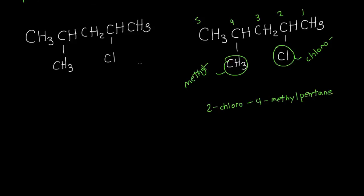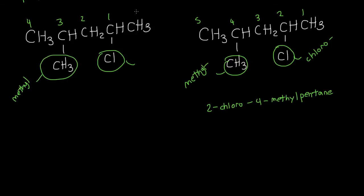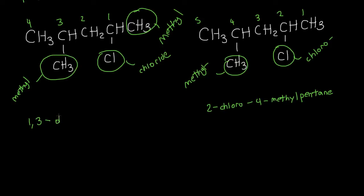For functional class naming, those symmetry rules don't apply — you give priority to your halide. Number one starts at the chloride, and we count four carbons in the longest chain: butyl. We have methyl groups on carbons one and three. Using di- for two identical groups, the first word is 1,3-dimethylbutyl. The second word is chloride. So the full functional class name is 1,3-dimethylbutyl chloride.